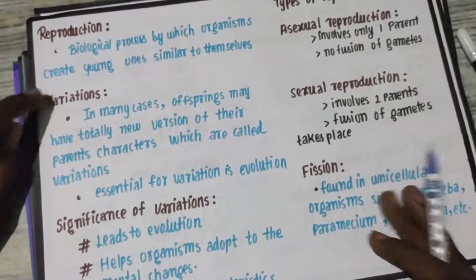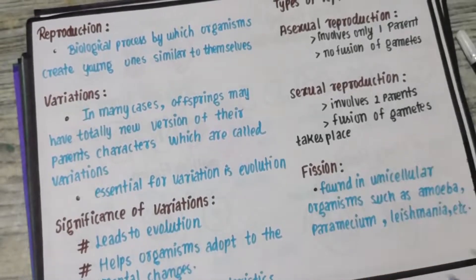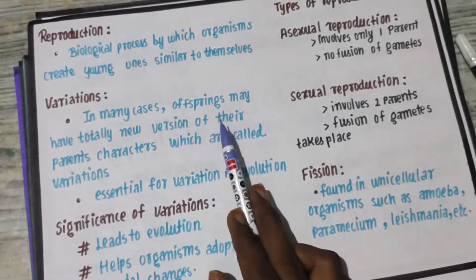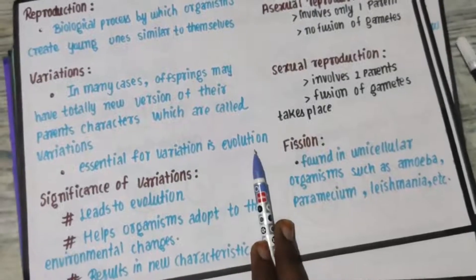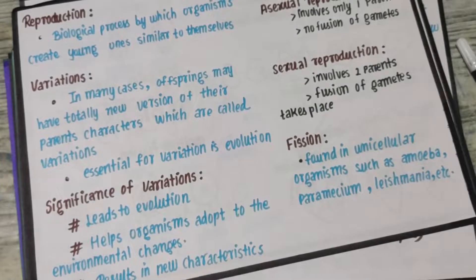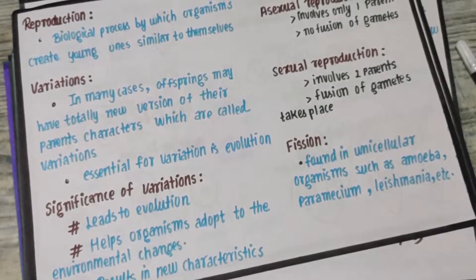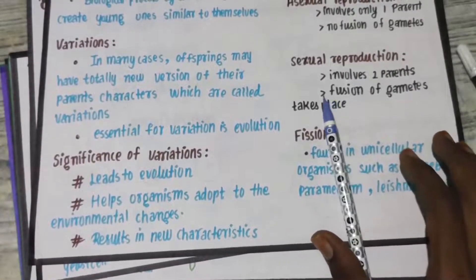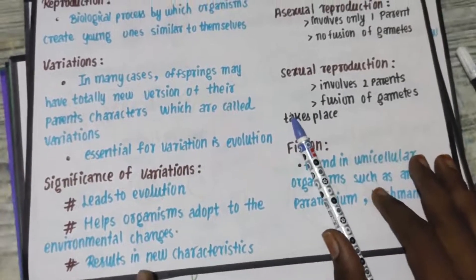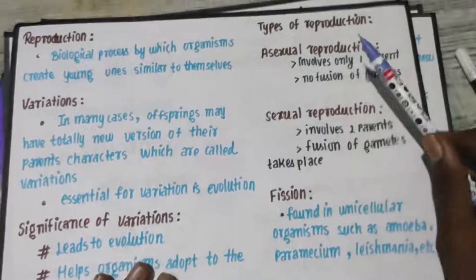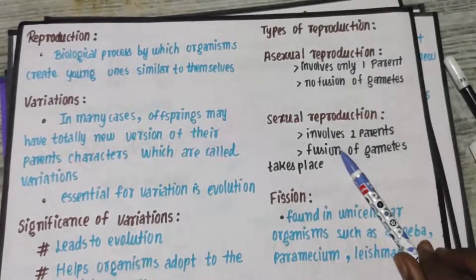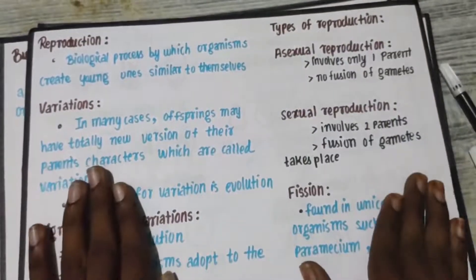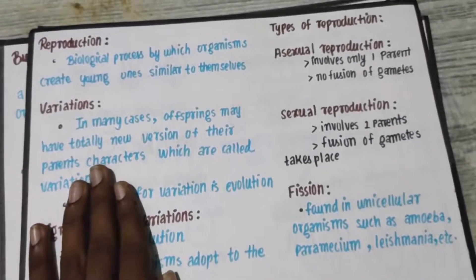So to summarize: the biological process of reproduction is how organisms create young ones. Variation means the young ones will also vary from their parents, and that is important for evolution. When environmental changes occur, variation helps organisms survive and results in new characteristics. The types of reproduction are asexual — involving one parent — and sexual — involving two parents. If you have doubts, you will find notes in our WhatsApp group and Telegram group.